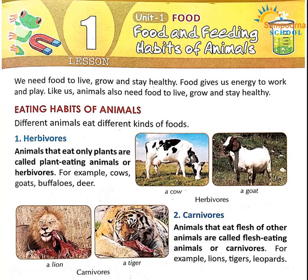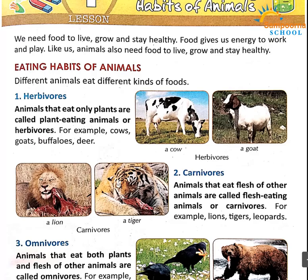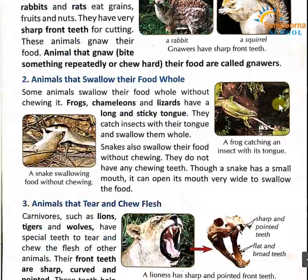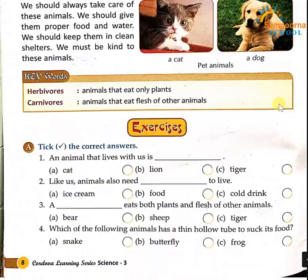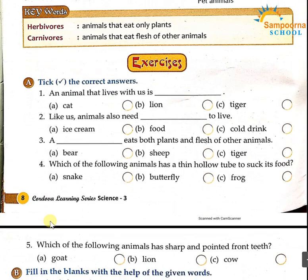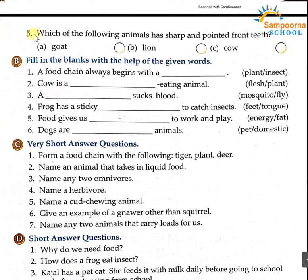Hello students, let's start our science subject, chapter number 1: Food and Feeding Habits of Animals. So let's start with our lesson. As students of class 3rd, we have done the explanation of this chapter and we have done exercise A till part 4. I think you all have done this in your notebook. Now we will start with point number 5.